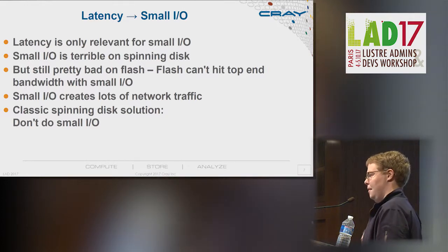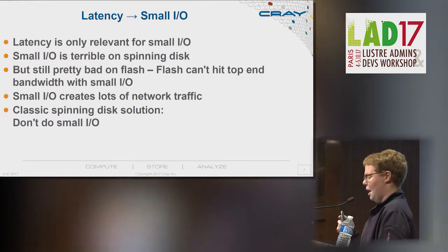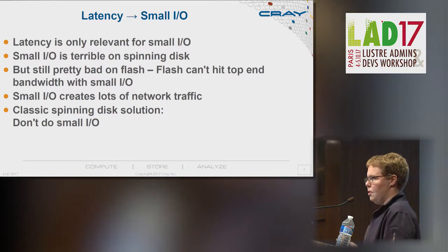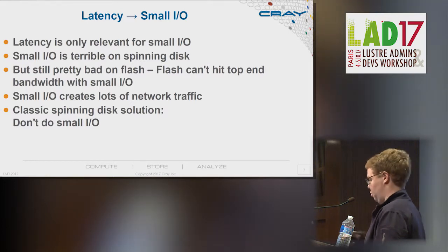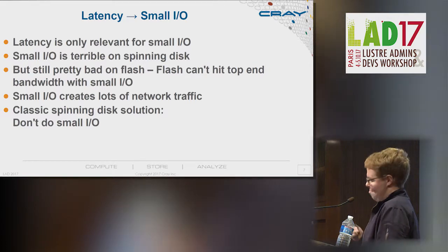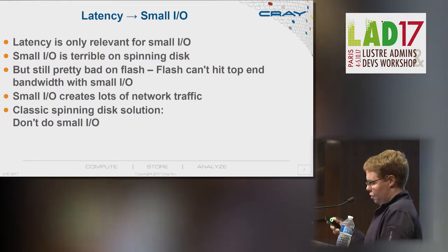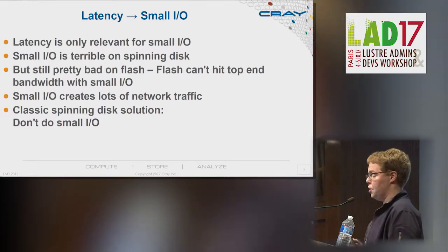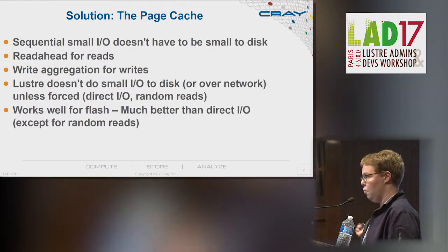When you talk about latency, it's really only relevant for small IOs. And small IO is absolutely terrible on spinning disk, but it's still kind of bad on flash. Everybody advertises how many IOPS they can do at 4k, but when you multiply those numbers together, that's a third of the top-end bandwidth your flash reports. If you actually do 4k reads, you'll notice you're getting maybe two gigabytes a second. And doing small IO over your network creates a huge amount of network traffic, which can cause various problems.